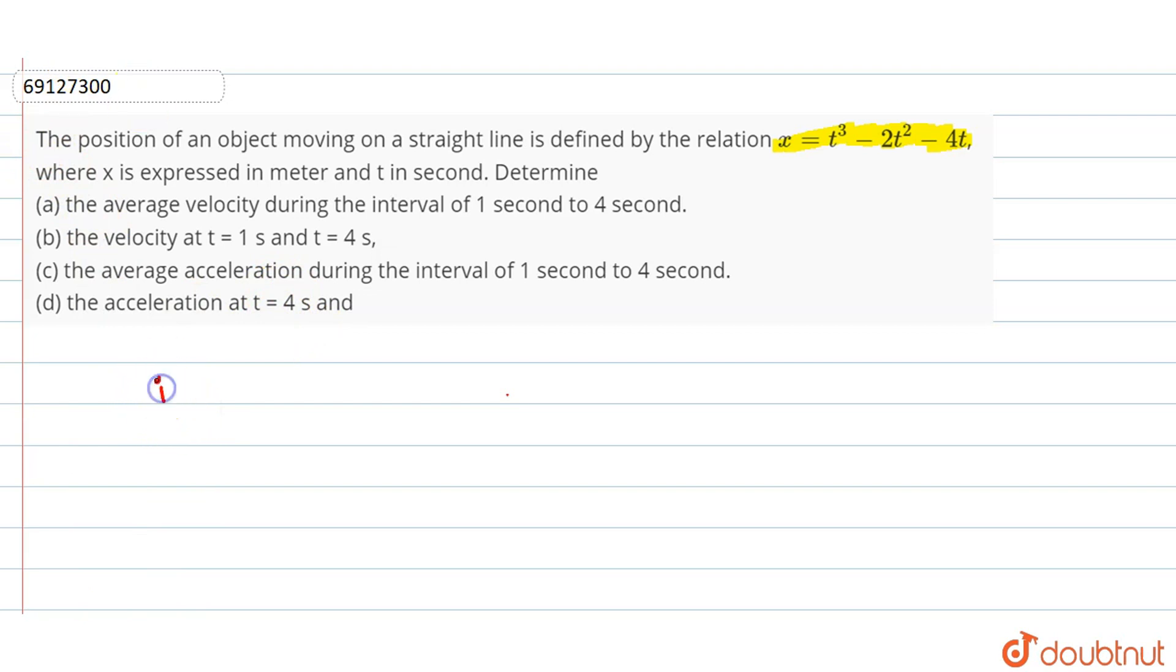Average velocity. Average velocity is equal to total displacement upon total time. Total displacement upon total time.